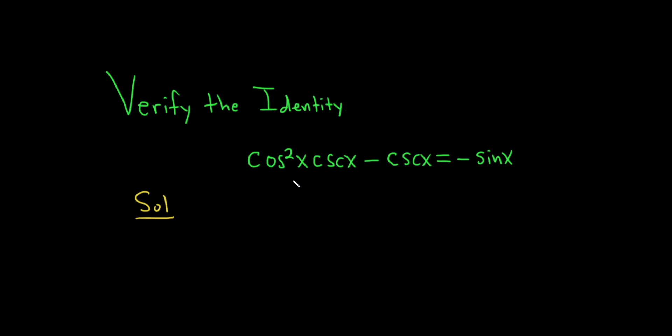So we'll start by writing it down again. We have cosine squared of x, cosecant of x, minus the cosecant of x. And we want to show that it's equal to negative sine x.